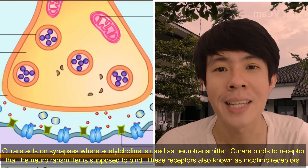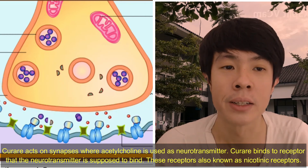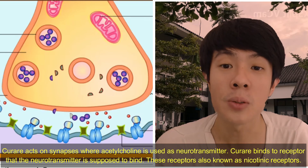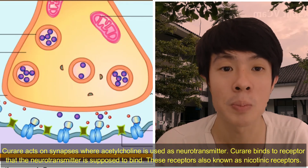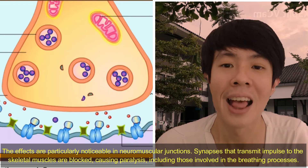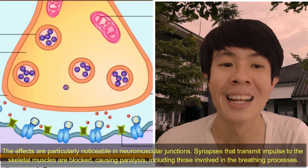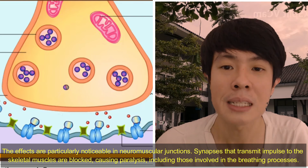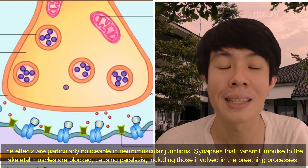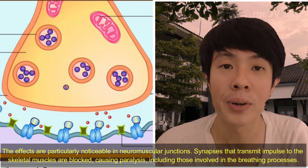Curare acts on synapses where acetylcholine is used as a neurotransmitter. Curare binds to the receptor that the neurotransmitter is supposed to bind — also known as nicotinic receptors. The effects are particularly noticeable at the neuromuscular junction. Synapses that transmit impulses to skeletal muscle are blocked, causing paralysis, including those involved in the breathing processes.